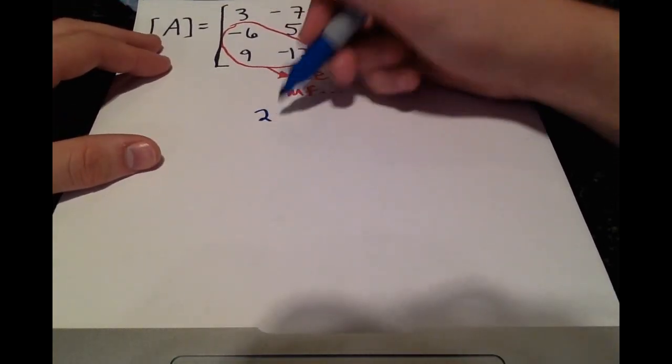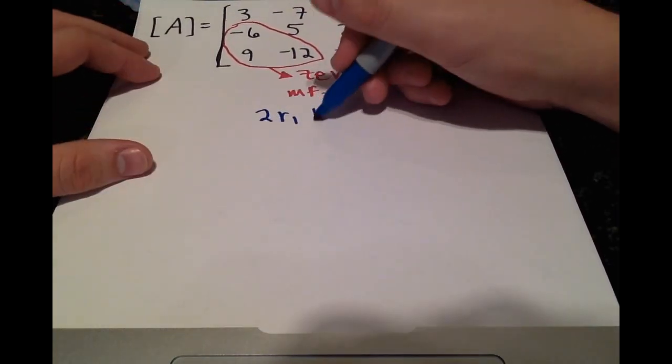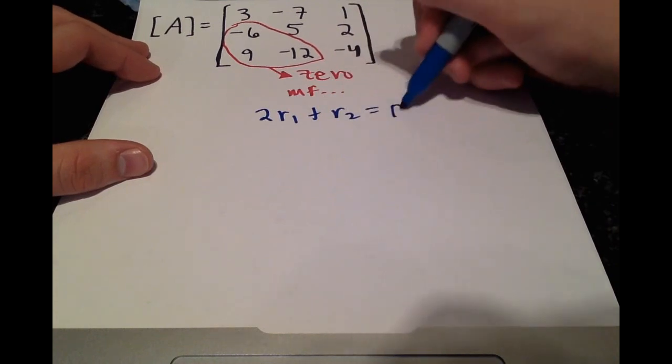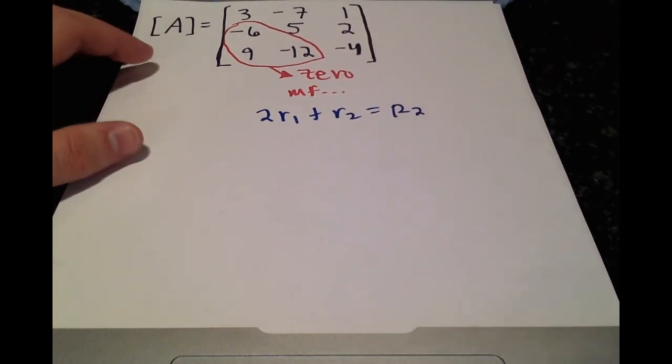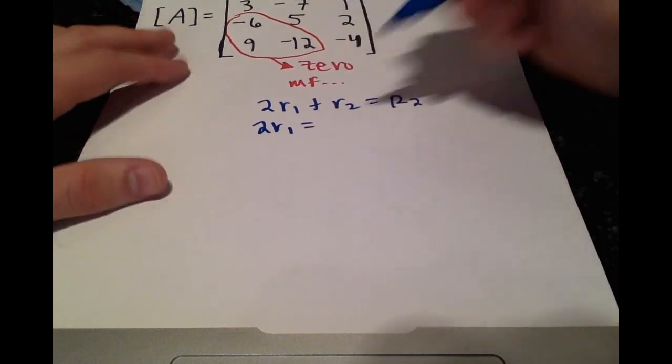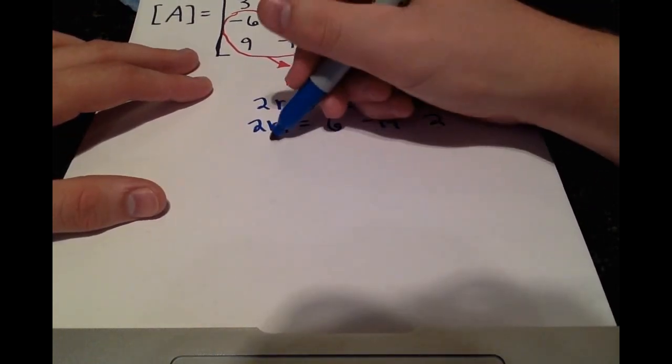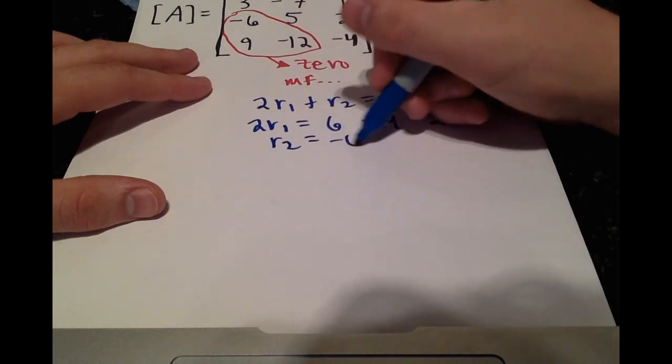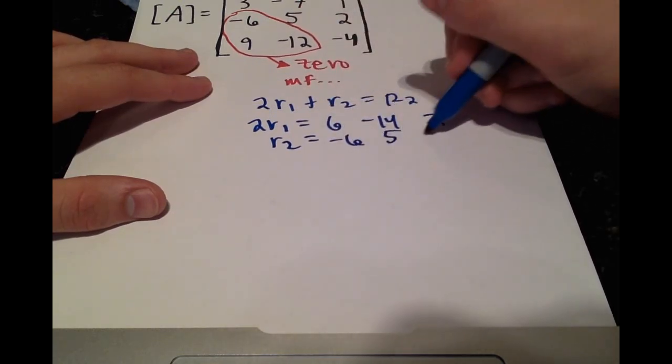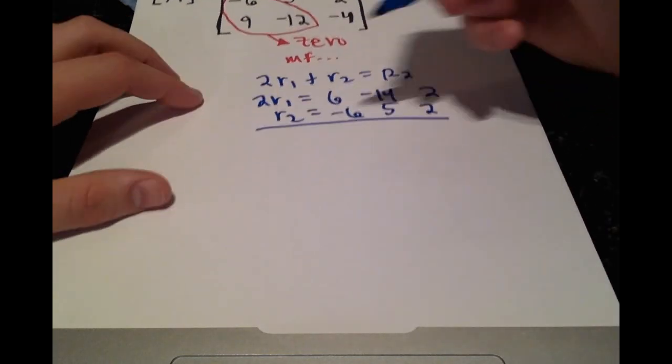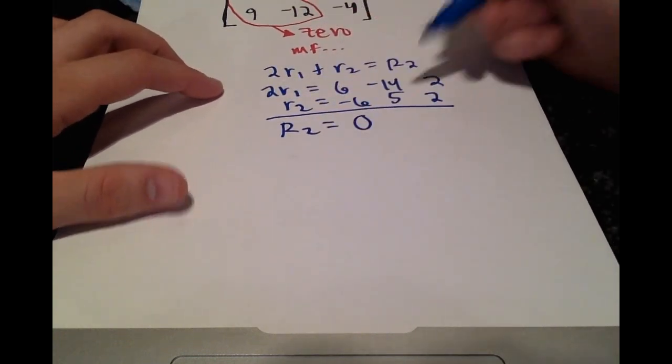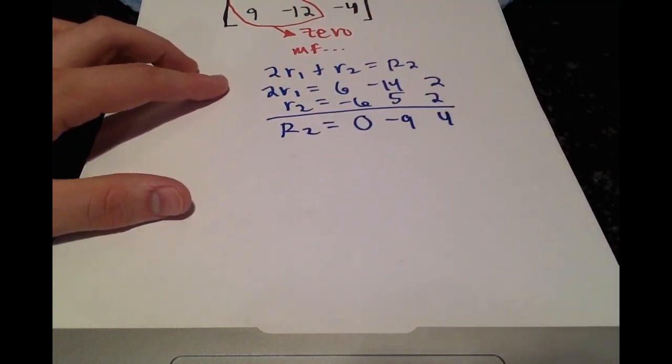So we have 2 times row 1 plus row 2 is going to equal our new row 2. So 2 times row 1 is going to be 6, negative 14, 2. Row 2 is negative 6, 5, 2. Adding these gives us our new row 2, 0, negative 9, and 4.